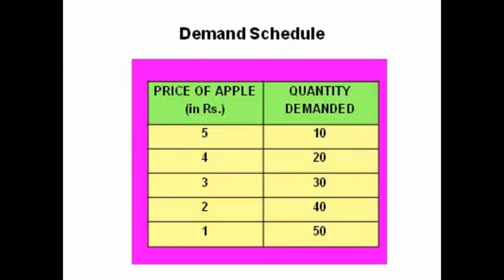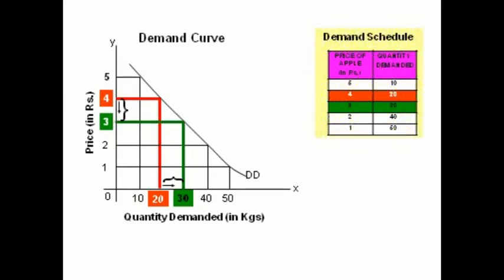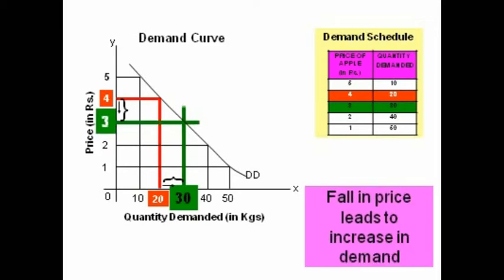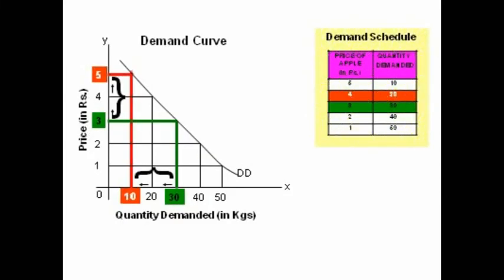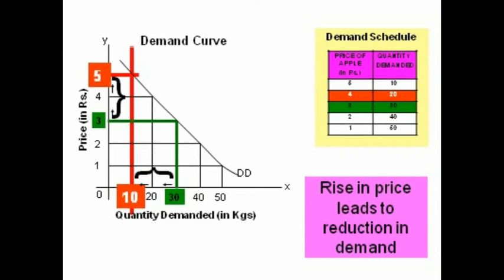The law of demand can be explained by the demand schedule and demand curve. The demand schedule lists the quantities of apples purchased by a consumer at different levels of prices. When the price of apple falls from 4 rupees to 3 rupees, the consumer's demand for apple increases from 20 kgs to 30 kgs. But when the price hikes from 3 rupees to 5 rupees, he would decrease his demand from 30 kgs to 10 kgs. Thus, the demand curve is a downward sloping curve from left to right, indicating an inverse relationship between price and quantity demanded.